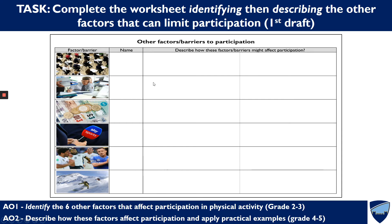On your worksheet, from memory, try and identify and write the name of each factor we've just looked at. I only want you to write in the left-hand column here. On the left-hand side, in your own words, describe how you think that particular factor might affect participation. This one here, I'll give you — it's education. Just a couple of sentences describing how you think that would affect somebody's participation level. Give yourself six to eight minutes to pause the video and complete that task.